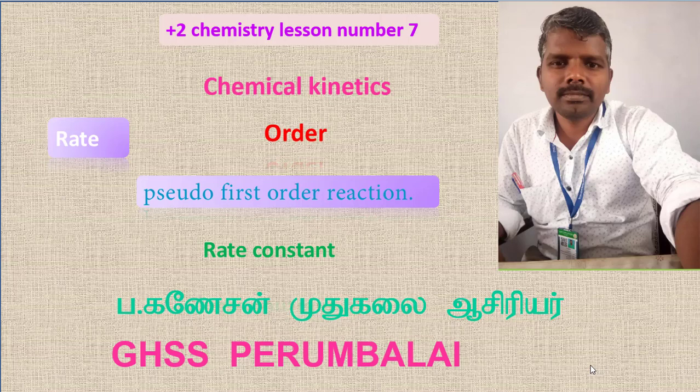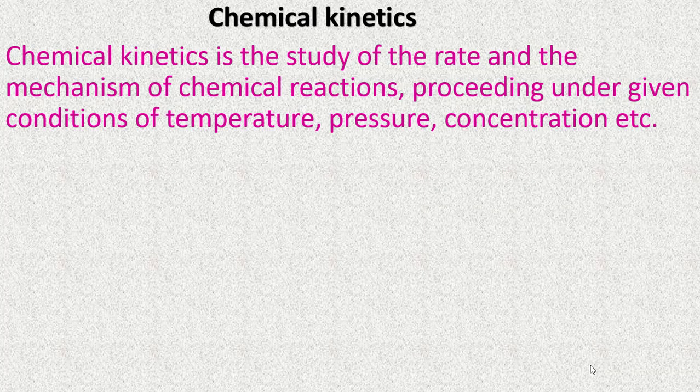Good morning. This video will discuss plus two chemistry lesson number seven: chemical kinetics. This lesson covers rate and order, pseudo first order reaction, rate constant, and the differences between rate and rate constant, order and molecularity of the reaction. Chemical kinetics is the study of the rate and the mechanism of chemical reactions proceeding under a given temperature, pressure, and concentration.